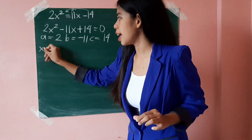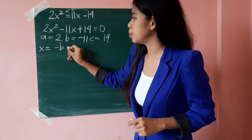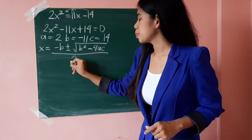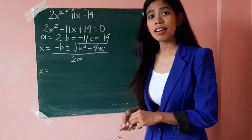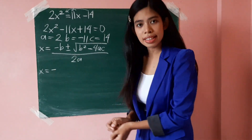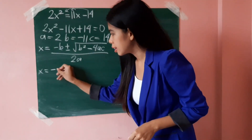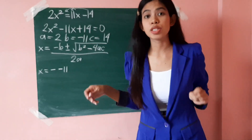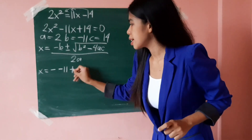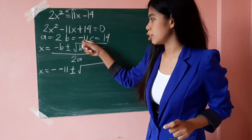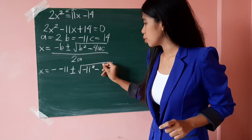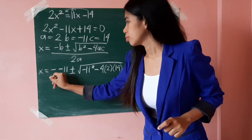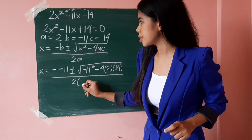Substitute these values in the quadratic formula: x equals negative b, plus or minus square root of b squared minus 4ac, all over 2a. Since the value of b is already negative, negative times negative 11 becomes positive 11. So we have x equals positive 11, plus or minus square root of negative 11 squared minus 4 times 2 times 14, all over 2 times 2.